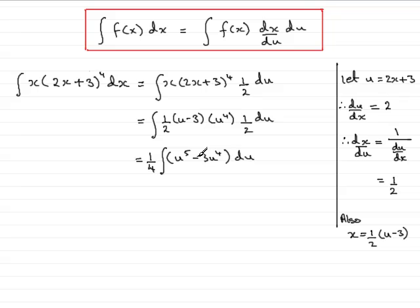Now I can integrate both of these terms in the usual way. We have the quarter out the front, I'm going to put square brackets in here, and we have u to the power 6 over 6. For minus 3u to the 4, when we integrate that we have minus 3u to the power 5 over 5. And don't forget the constant of integration plus c.